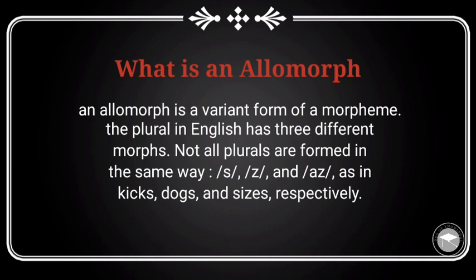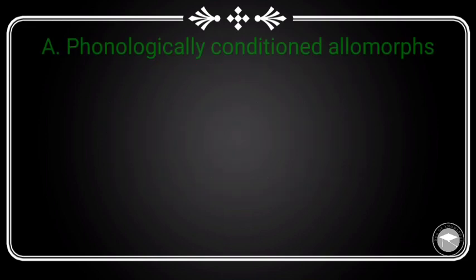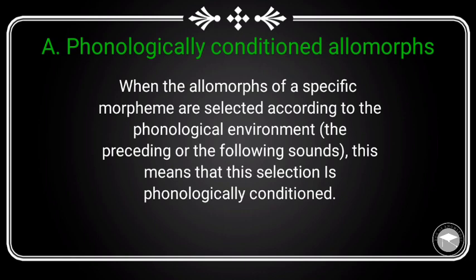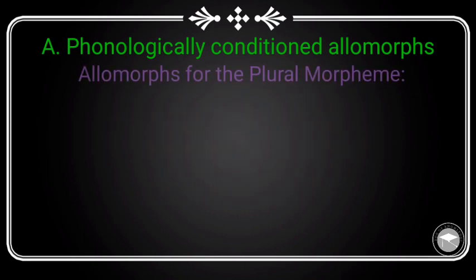الجمع اللي تابع القاعدة في الإنجليزية كنديروه بإضافة حرف اس للكلمة، ولكن النطق كيختلف من كلمة لأخرى. مثلا: kicks، dogs، sizes. دابا غنشوفو الأنواع ديال الالومورفس. عندنا زوج ديال أنواع: phonologically conditioned allomorphs أو lexically conditioned allomorphs. نبدأ بالأولى: when the allomorphs of a specific morpheme are selected according to the phonological environment, this means that this selection is phonologically conditioned. الالومورفس اللي البلاصة ديالهم في النطق هي اللي كتحكم في نطقهم.